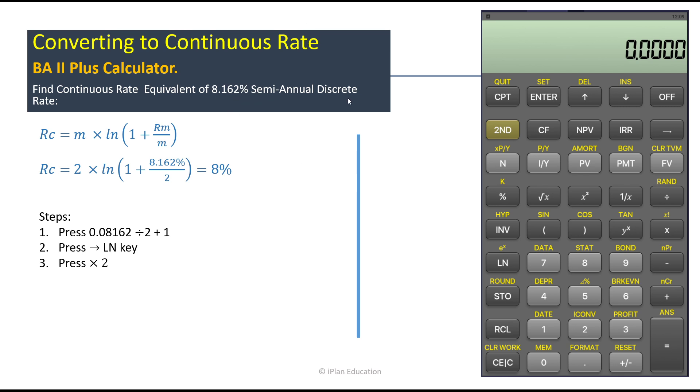So to solve it we use this formula here which is m into, that is number of times compounded or the frequency, into ln multiplied by 1 plus the discrete rate divided by frequency, that is m.